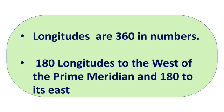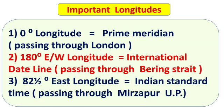Longitudes are 360 in number — 180 longitudes to the west of the prime meridian and 180 to the east. Some important longitudes: 0 degree longitude is the prime meridian passing through London. 180 degree east-west longitude is the international date line, passing through the Bering Strait. 82.5 degrees east longitude is the Indian Standard Time meridian, passing through Mirzapur, Uttar Pradesh.